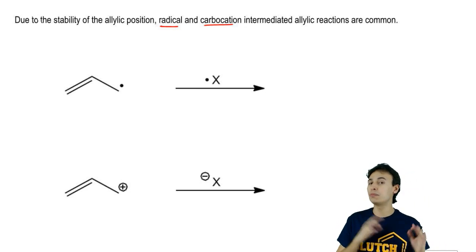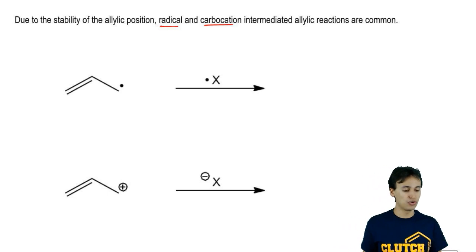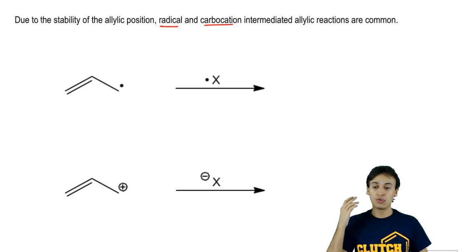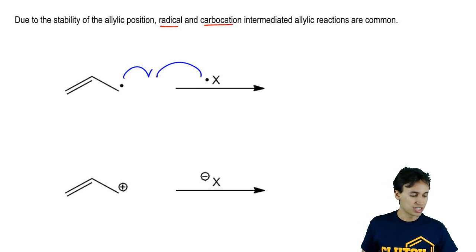I'm just going to show you two brief examples before we get into the specific types of reactions. As you can see, imagine that you have a radical in the allylic position and a radical reagent. You could see a termination step occurring.